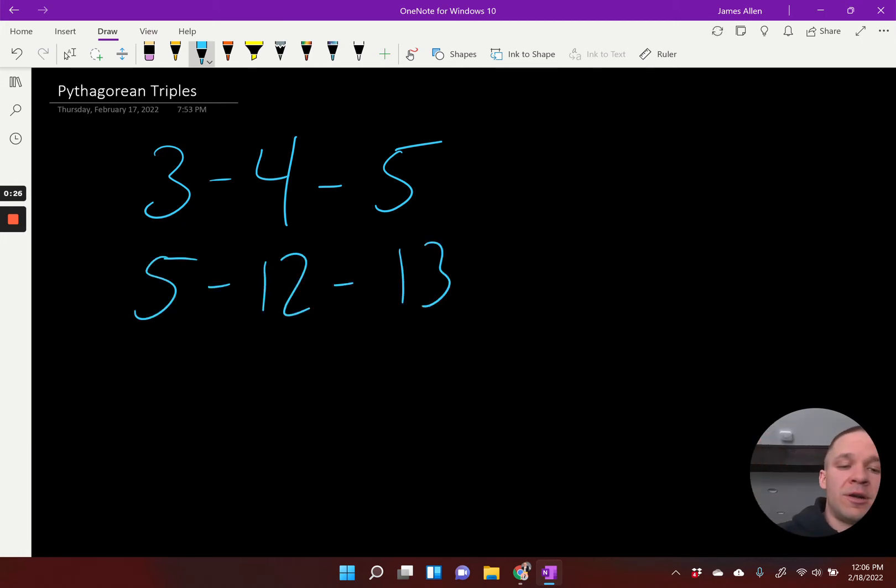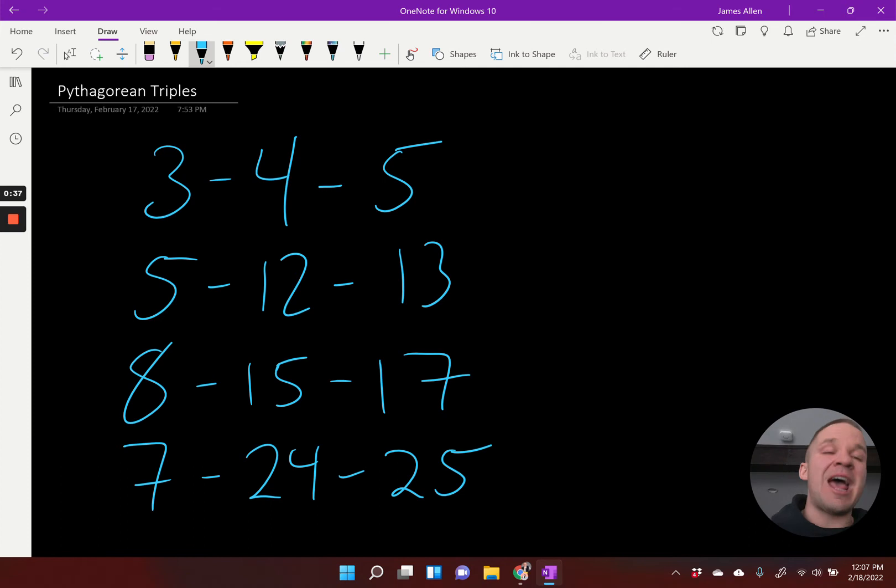5 squared plus 12 squared equals 13 squared. And then I've got 8, 15, 17. And then we have 7, 24, 25. We really don't get into any that are larger than that every once in a while, but those are the main four that you're going to see most common.